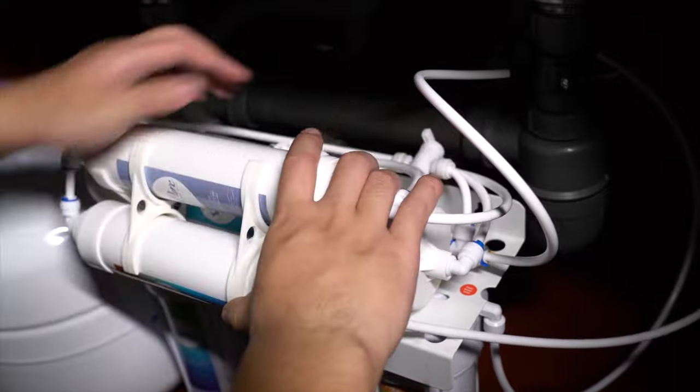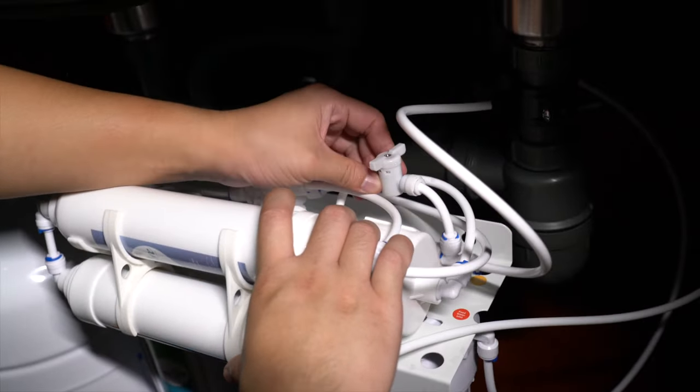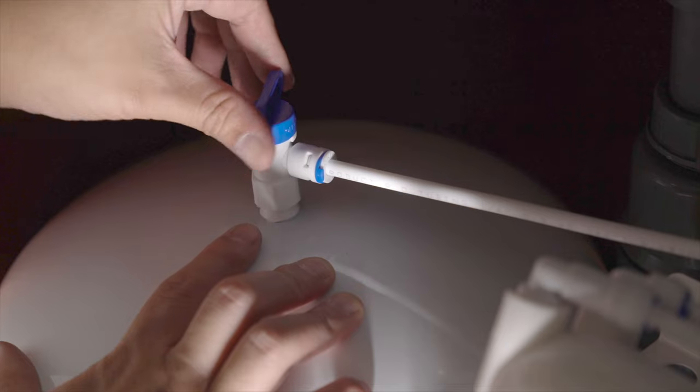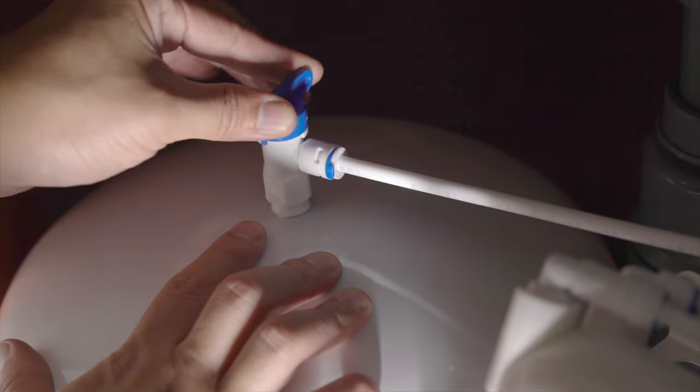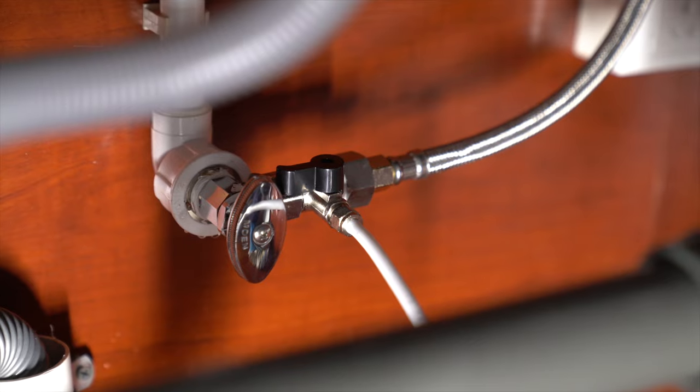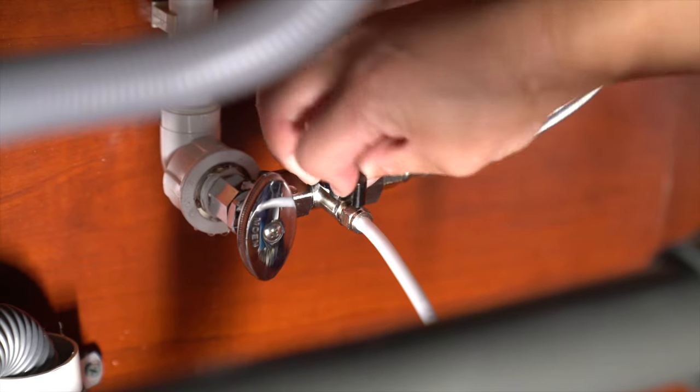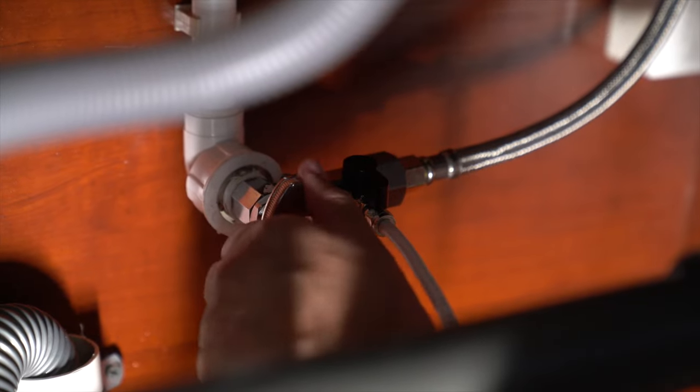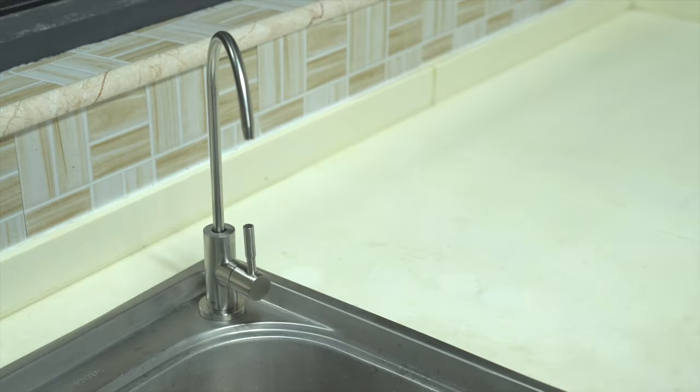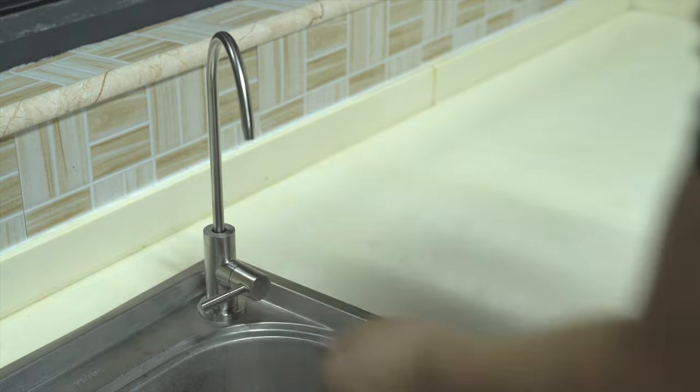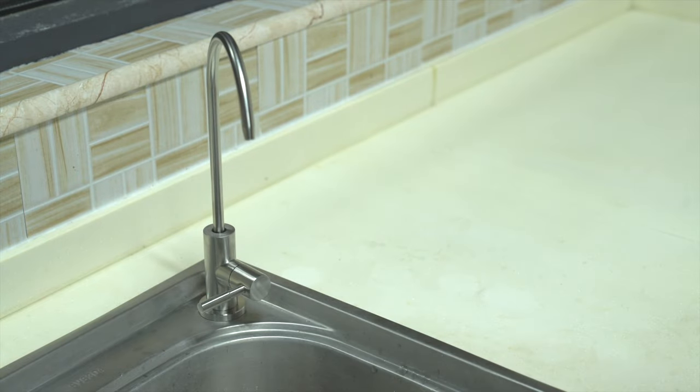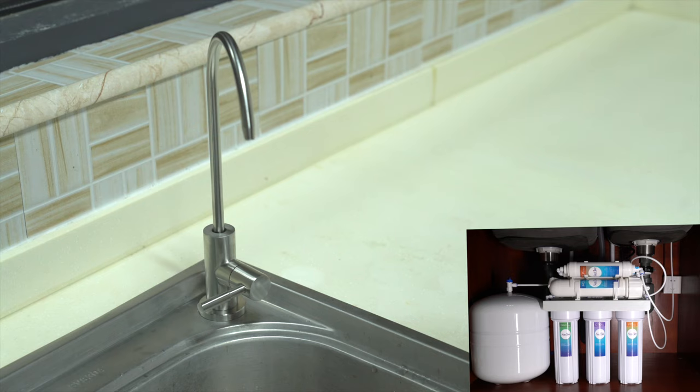The next stage is to commission and flush the system ready for use. One, ensure the manual flush valve on the T1 central unit is closed. Two, close the pressure tank ball valve. Three, turn on the cold water shutoff valve and the feed water adapter. Four, open the faucet and allow the water to run to drain to rinse all components. During this time, review all connections and make sure there are no water leaks.